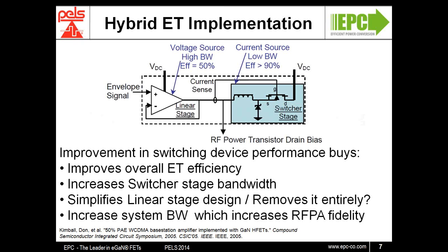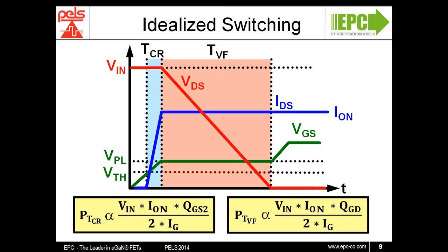When the device current reaches the load current, the voltage across the device starts dropping. The rate at which this drop occurs is determined by the device parameter QGD. Similarly, at turn-off, the same two parameters are involved. To minimize the switching losses in a hard switching application, you need to minimize both QGD and QGS2 in a device for a given RDS-on. The hard switching performance of a device can be predicted by considering the product of RDS-on and the sum of QGD and QGS2. This is known as the hard switching figure of merit.